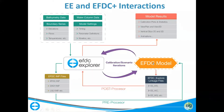EFDC Plus has been modified to generate linkage files. As the model runs, it produces a series of binary output files placed in a folder called hash output. EFDC Explorer can then read those files and generate all types of reports, plots, and analyses, producing a wide range of visualization and analysis outputs that we'll discuss later.